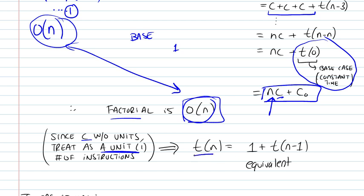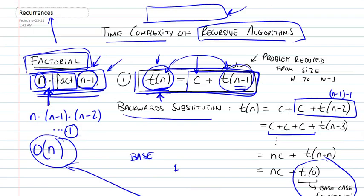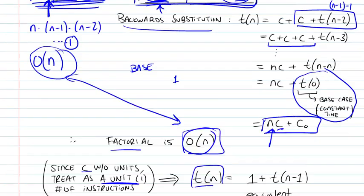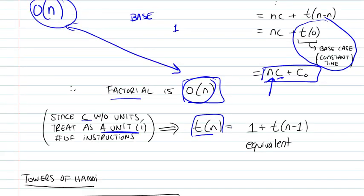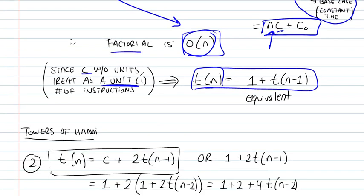So t of n, we could just simply express it as 1 plus t of n minus 1 instead of what we had before, c plus t of n minus 1. So they are equivalent expressions, recurrence relationships, and they express the same thing.